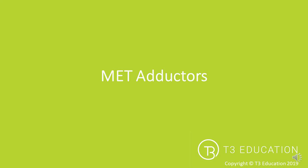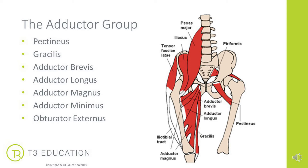MET applied to the adductor group — PIR, post-isometric relaxation. The adductors is the name we give to a group of muscles that share the common function of adducting the hip, bringing the leg towards the midline. We have pectineus, gracilis, adductor brevis, longus, magnus, minimus, and obturator externus. This MET has an impact on all of those muscles, or the tightest one that may be limiting range of motion.